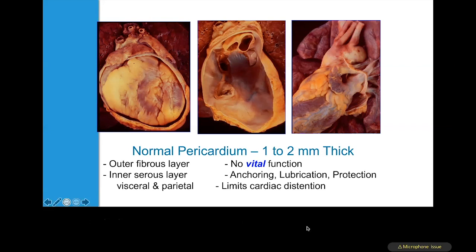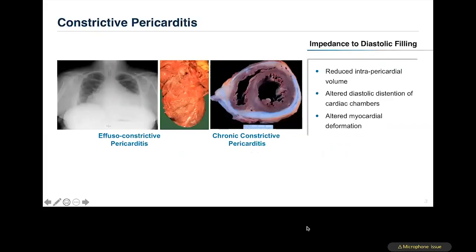The pericardium helps prevent abnormal excessive dilatation of chambers — something seen immediately after pericardiectomy during the post-surgical phase, where you may see increasing chamber size that adapts over time. It also helps limit cardiac distention during the phase of cardiac filling.